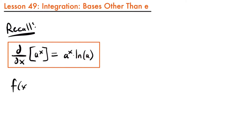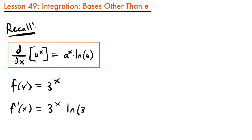So if we had f of x is equal to 3 to the power of x, then we know that the derivative f prime of x is equal to 3 to the power of x times the natural log of that base, 3. So we know how to take the derivative of an exponential function like 3 to the power of x, but how would we find the integral of an exponential function like 3 to the power of x?